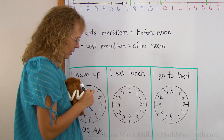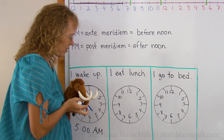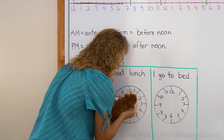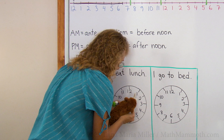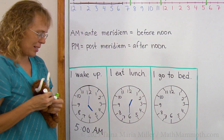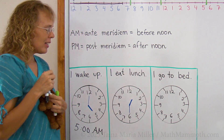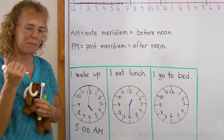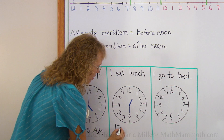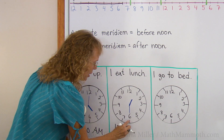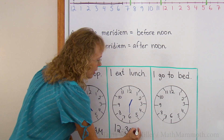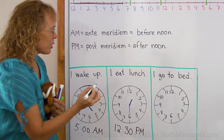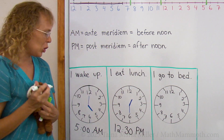What time would you eat lunch? What time is that? It's halfway — look at the hour hand — halfway between 12 and 1. The hours are 12, the minutes are 30, and now this is PM. It is after noon, because 12 o'clock would have been exactly at noon.